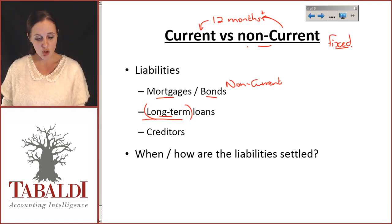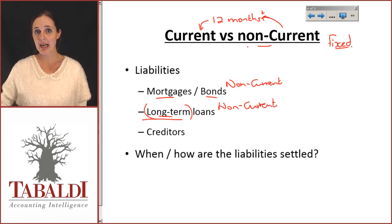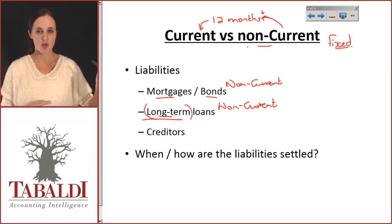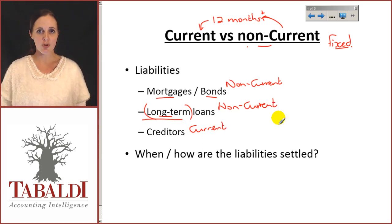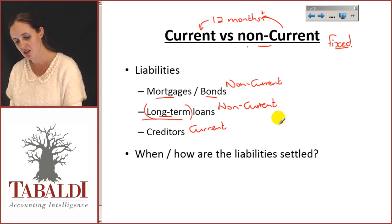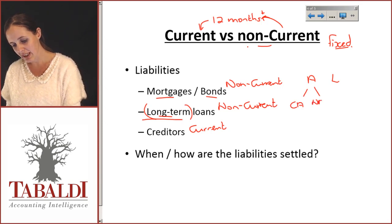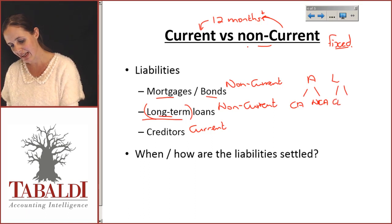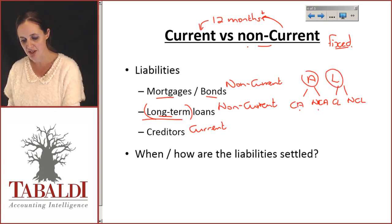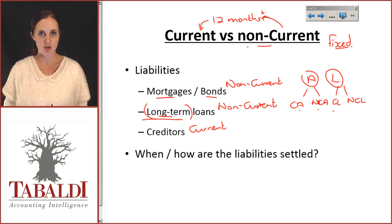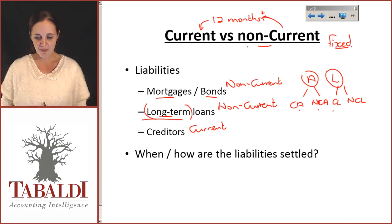So a long-term loan is also non-current. Your creditors — trade creditors you buy goods from — they want their money definitely within 12 months, so they go into current. When you give your financial information to the bank, they're not just going to look at your total assets and liabilities — they're going to look at your current assets, non-current assets, current liabilities, and non-current liabilities, and ask how it's broken up. It's very useful to break down the practicality of how and when money is going to come in, and when it needs to leave the business.